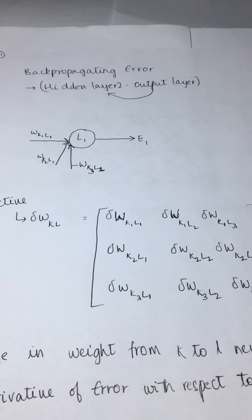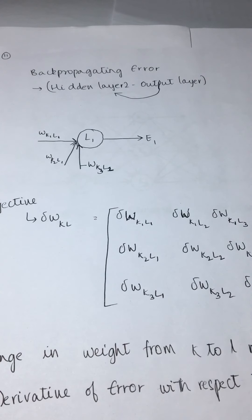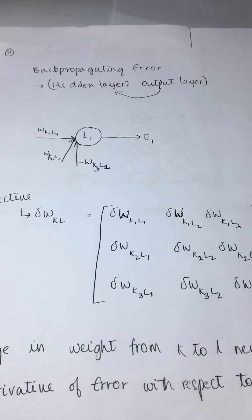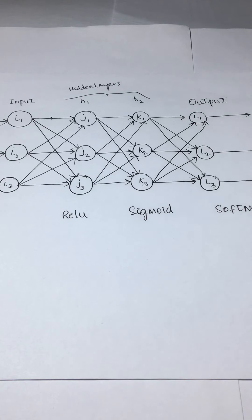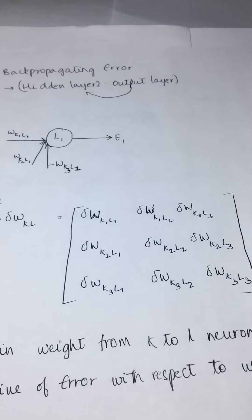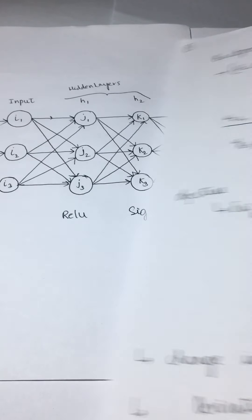In the previous session we completed the forward pass for the particular neural network. This is that particular neural network — we have completed the forward pass. The next pending thing is backward pass, or back propagation.